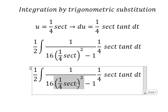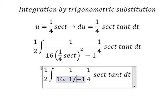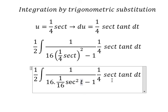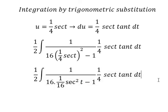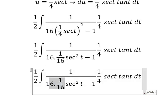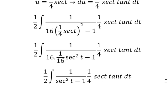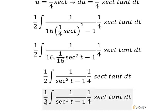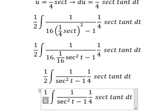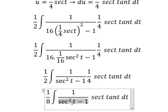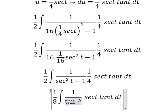So we have 1 over 16 secant squared t. We simplify numbers 4 and 2. We have 1 over 8. This one we have tangent squared t.